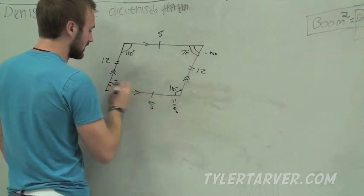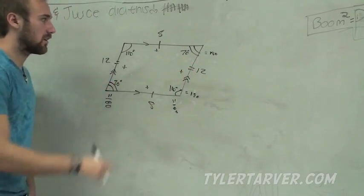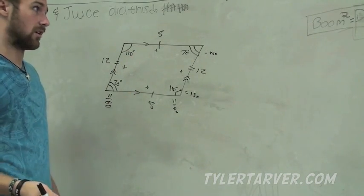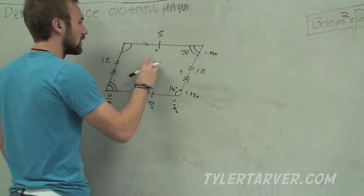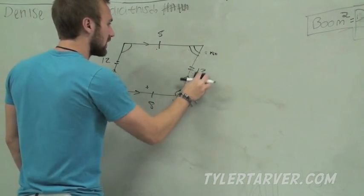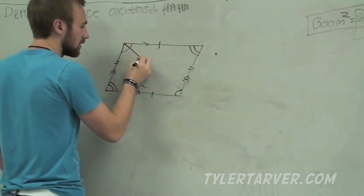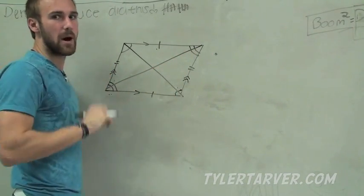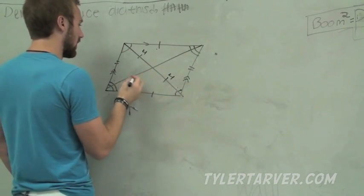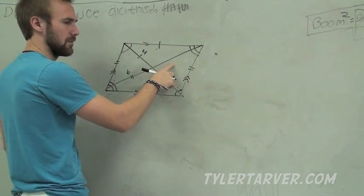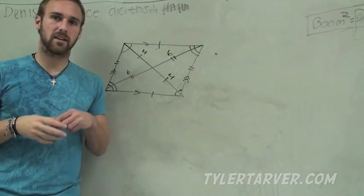The consecutive angles are supplementary: does 110 plus 70 equal 180? Of course it does — and that works for all consecutive angle pairs. All interior angles together add up to 360°. Last thing: those diagonals bisect each other — they cut each other in half. So if one half is 4, the other half is 4, making the whole diagonal 8. If one half is 6, the other half is 6, making the whole diagonal 12.